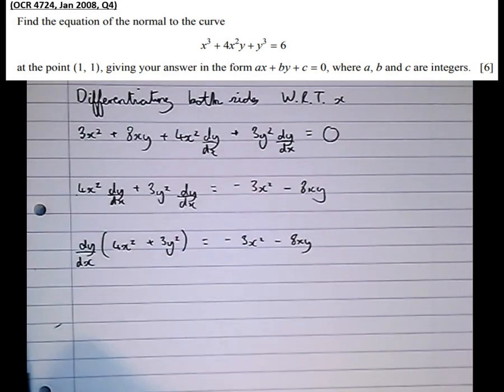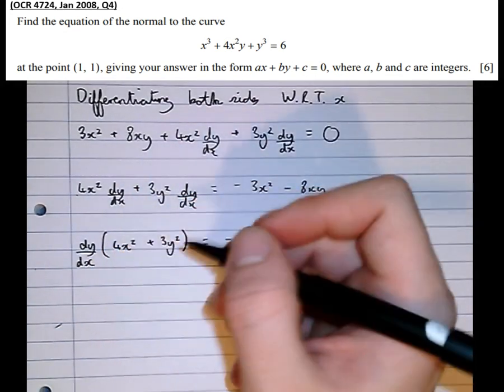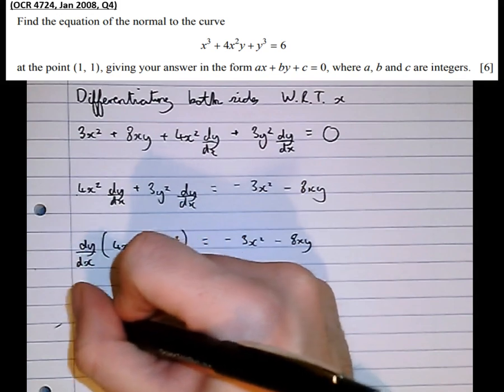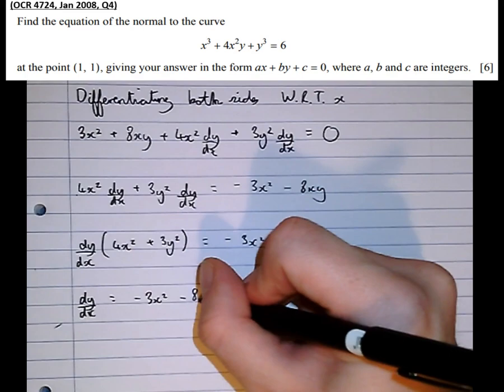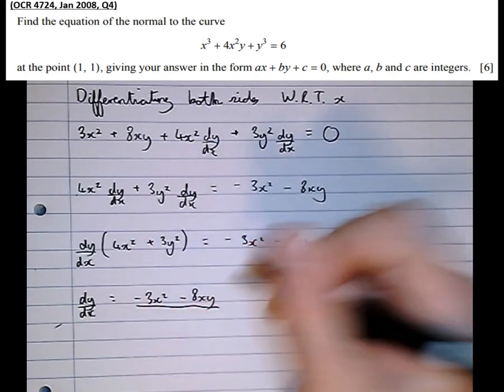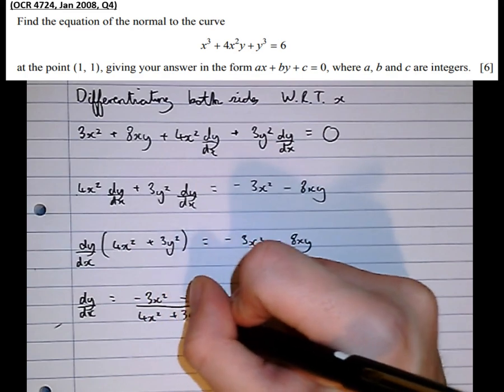And then dividing through by 4x² plus 3y², we get dy/dx equals minus 3x² minus 8xy over 4x² plus 3y².